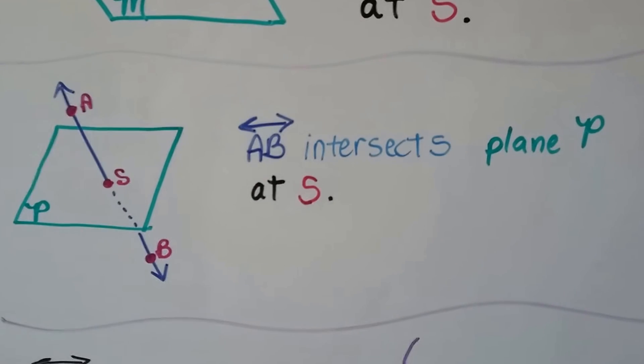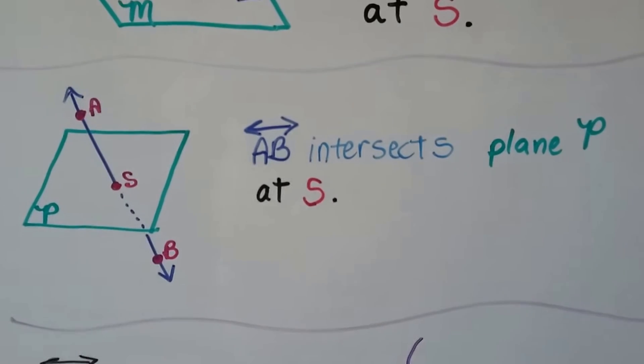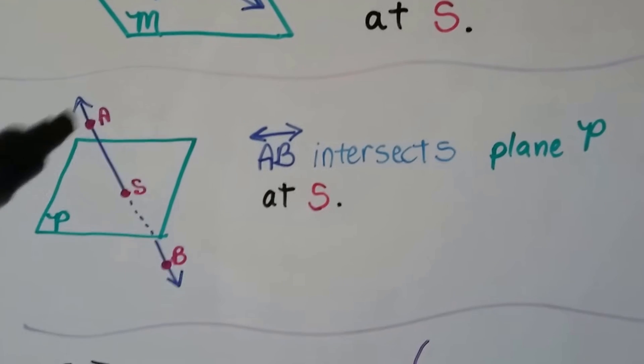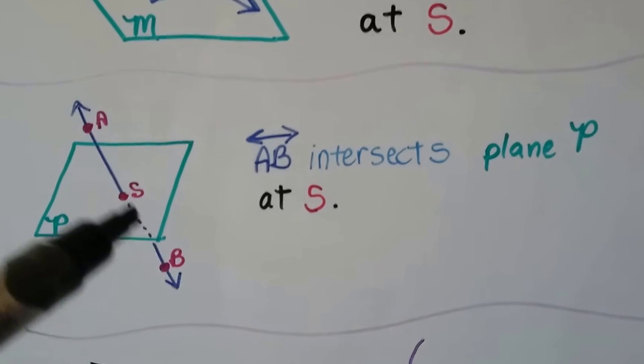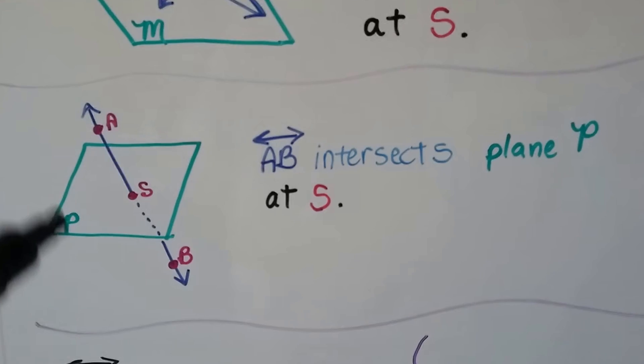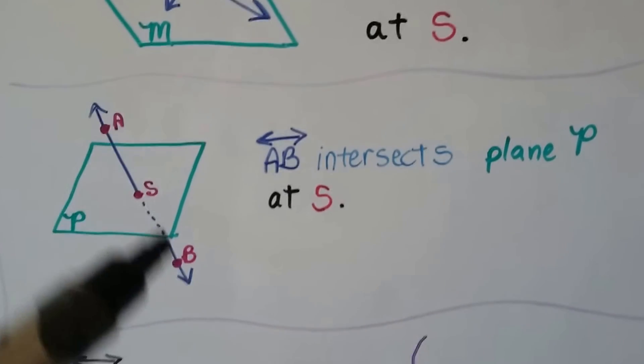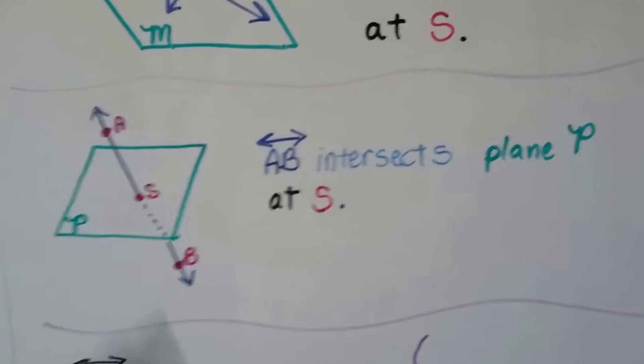Here we have line AB intersects plane P at S. So here's line AB. We've got our dashed line showing. This is really underneath this part, right? Here's plane P, and it's intersecting the plane at point S.